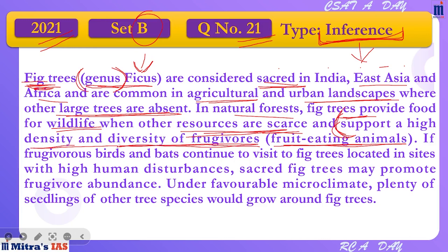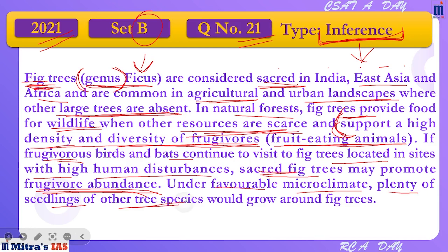The passage says it supports a high density and diversity of frugivores — frugivores ko support karta hai by providing food. If frugivore birds and bats continue to visit fig trees located in sites with high human disturbances, sacred fig trees may promote frugivore abundance — so if birds or bats visit the fig tree, these sacred trees may promote frugivore abundance and provide lots of food. Under favorable microclimate, plenty of seedlings of other species would grow under the fig tree.